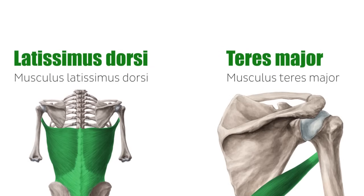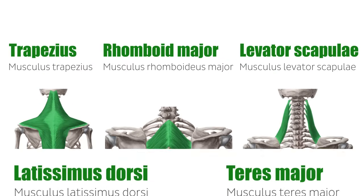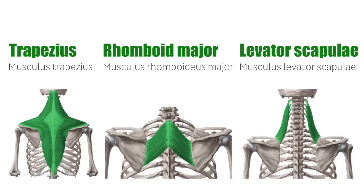The latissimus dorsi and teres major lie posteriorly and adduct the arm towards the back. The trapezius, rhomboid major, and levator scapula muscles elevate the scapula to cause shrugging of the shoulders and movement of the scapula to the posterior.